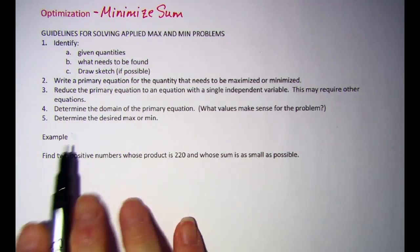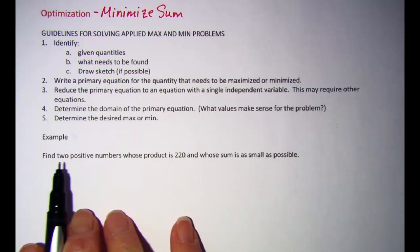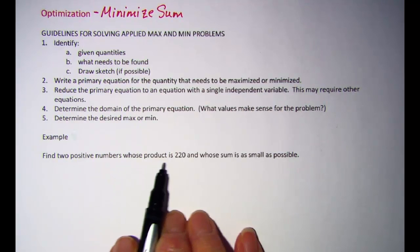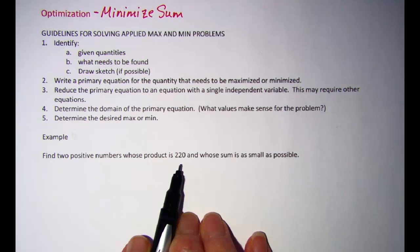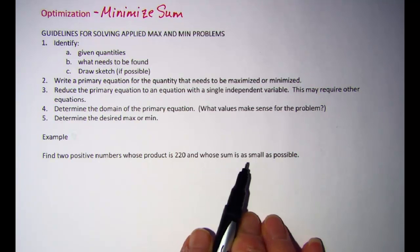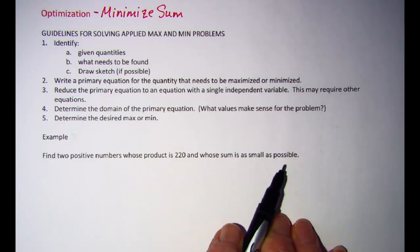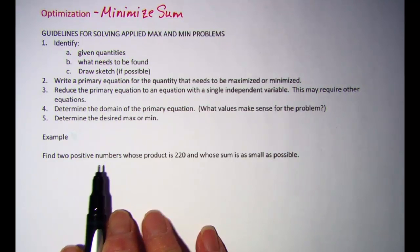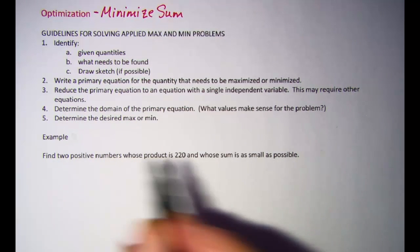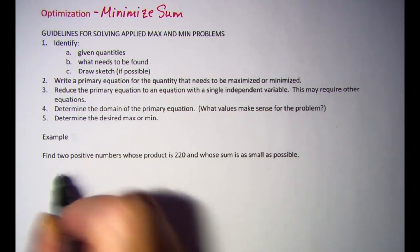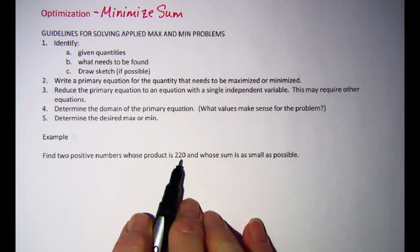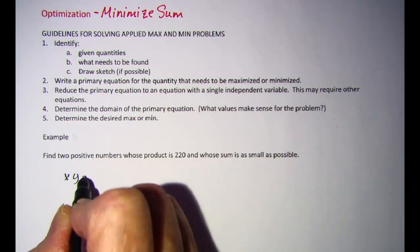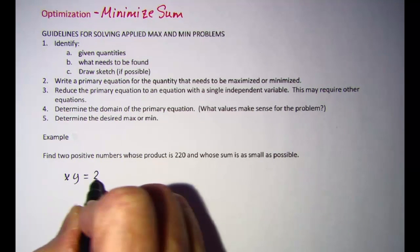The problem that we'll be doing is to find two positive integers whose product is 220 and whose sum is as small as possible. So our two numbers — let's use x and y — have to have a product of 220, which means x times y is equal to 220.